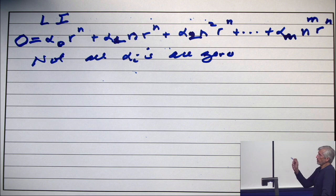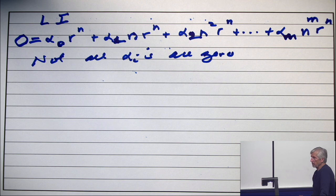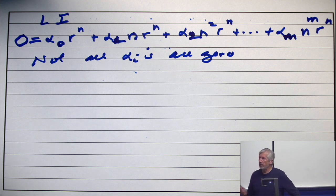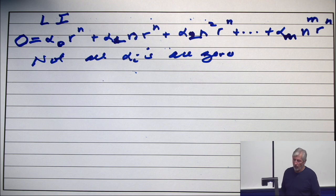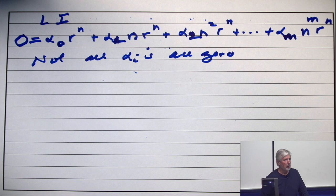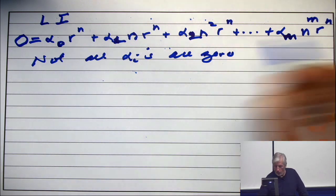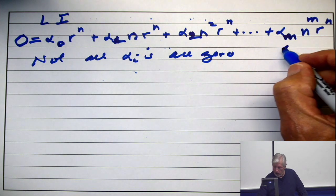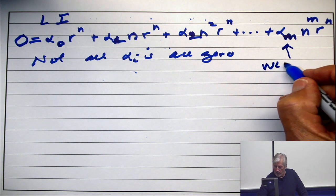So suppose the functions we're talking about are not linearly independent. So there's a linear combination which is 0. Okay, so take the highest term where the coefficient is not 0. Well, throw away the rest of them. So I'm going to assume without loss of generality that that one is not 0.